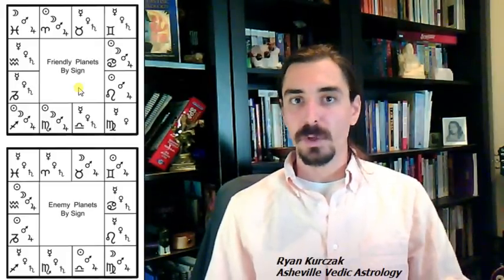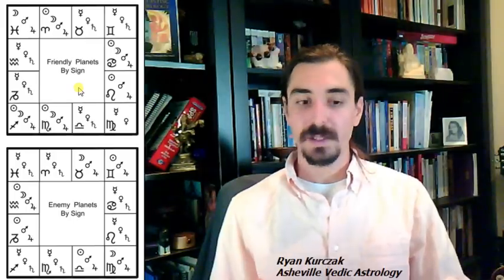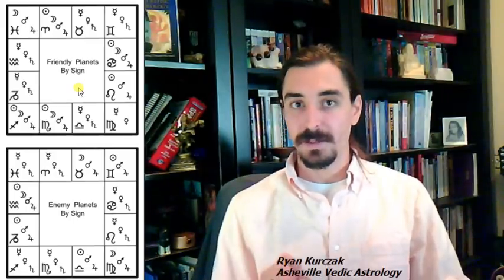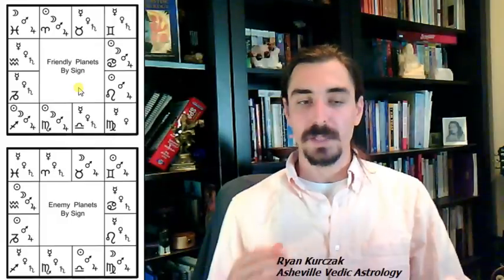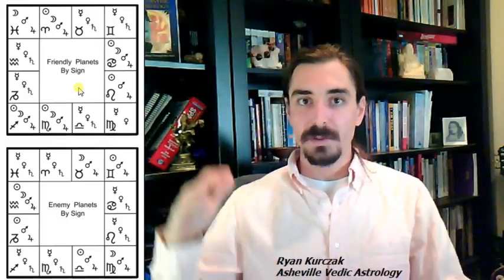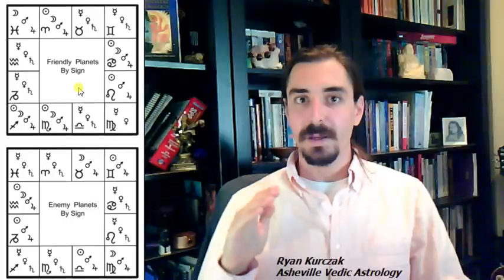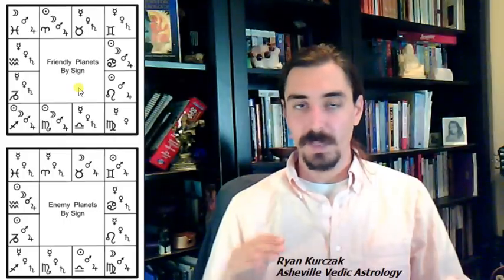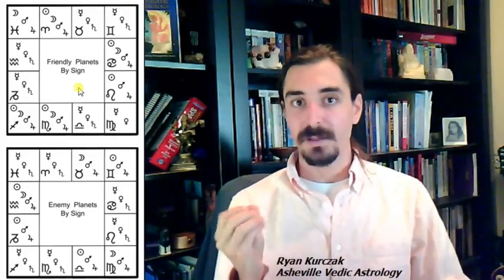The moon changes every two and a quarter days, or thereabouts, and that's more specific than the sun, but less specific than the ascendant, which changes every two hours. So we can see that in order of importance when we're looking at the specifics of a chart, sun is third, moon is second, ascendant is first. We need them all, but in regards to the specifics, the ascendant is most helpful.